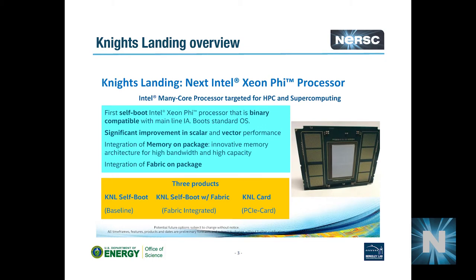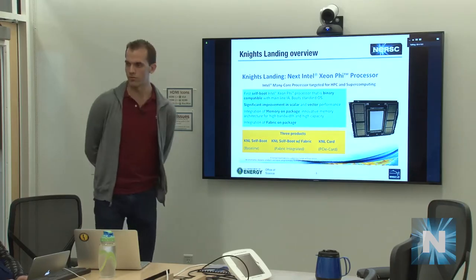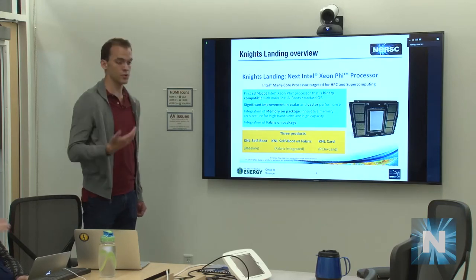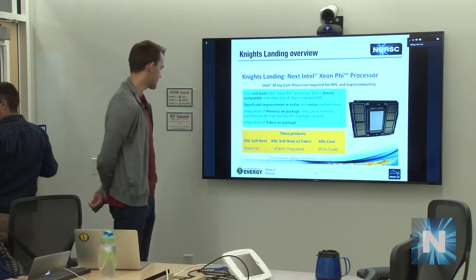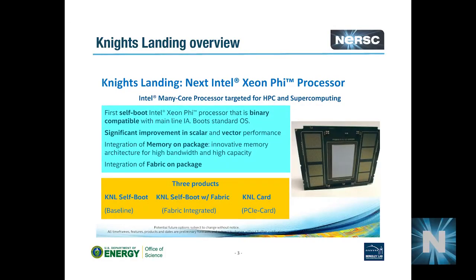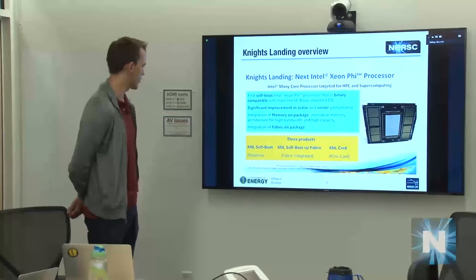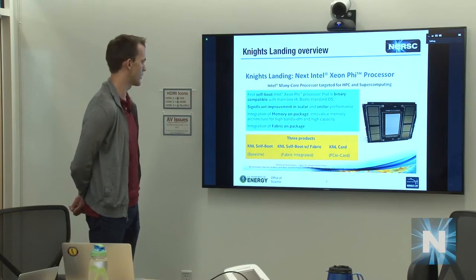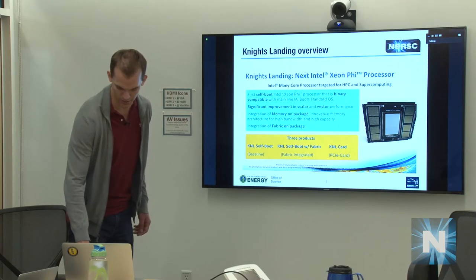KNL, formerly called Xeon Phi, is a codename Intel used until release. It is the second generation of the Xeon Phi architecture. Unlike Knight's Corner, which some of you may have used, it is a self-hosted architecture — the operating system runs directly on the Knight's hardware. There are significant improvements in both scalar and vector performance. Intel releases three versions of Knight's Landing; we are the KNL self-boot version on the far left. The fabric on-package is not relevant to Cori — we use Cray's fabric, not Intel's.